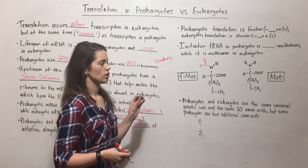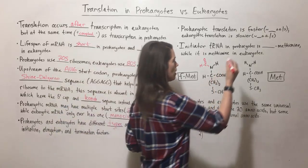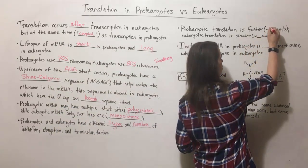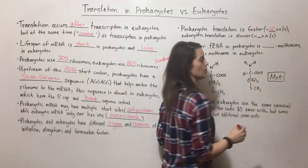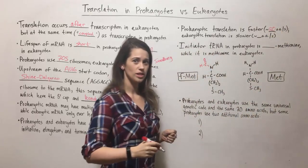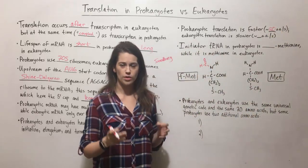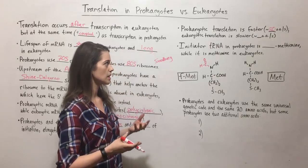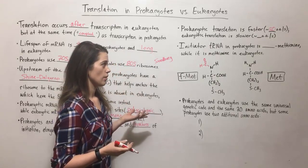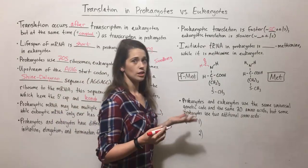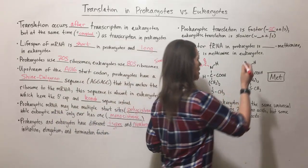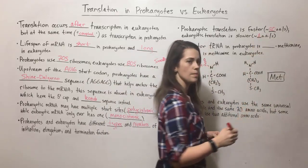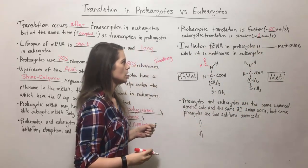Prokaryotic translation is also a lot faster. Prokaryotes can assemble roughly 20 amino acids per second — remember that amino acids are the building blocks of proteins. Eukaryotic translation, on the other hand, is quite a bit slower, averaging at only one amino acid per second.